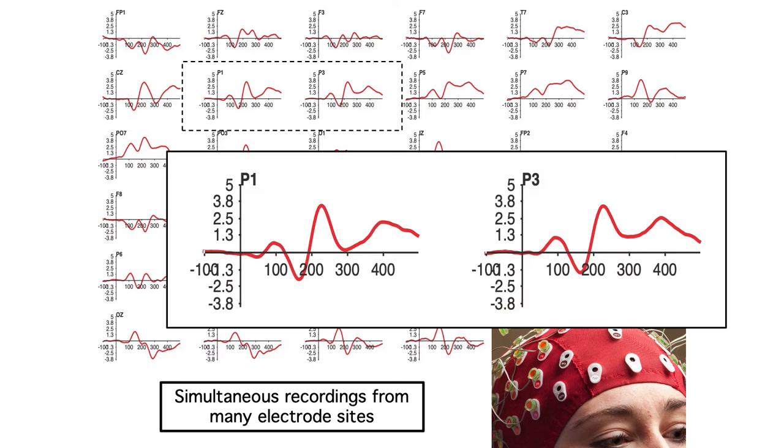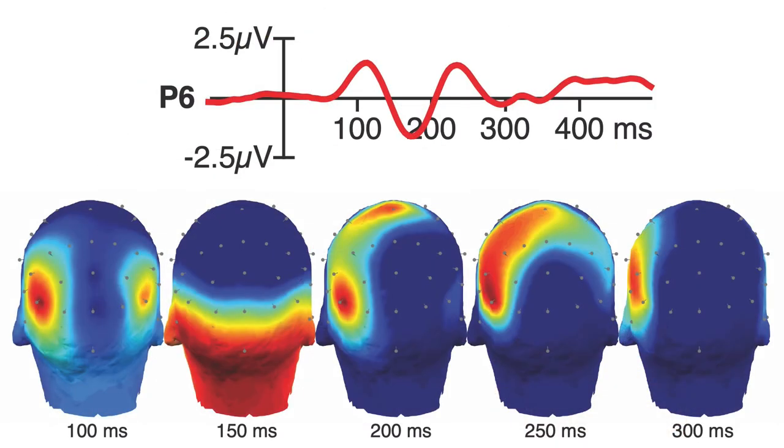Instead, we typically show the data from a single electrode site, or maybe a few sites, and then we show scalp maps to show the distribution of voltage at a given moment in time. Note that these maps use interpolation to show voltage over the entire scalp, even though we only have measures at the discrete electrode sites.